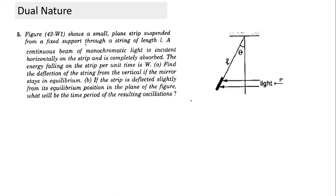What is the change in momentum equal to? Change in momentum equals negative of initial momentum. Final momentum minus initial momentum — since final momentum is zero, the change in momentum is in the opposite sense. We are concerned about the magnitude: change in momentum equals the initial momentum. Energy falling on the strip per unit time is given — that is what we call power.